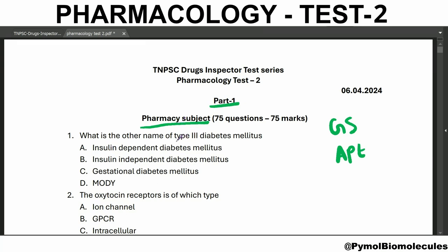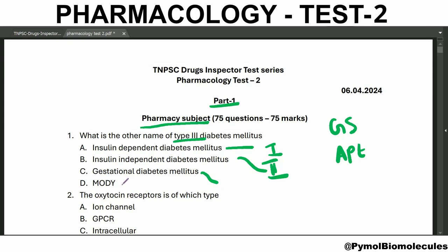What is the other name for type three diabetes mellitus? Insulin-dependent diabetes mellitus is type one. Insulin-independent is type two. There is also type three, which is called MODY — maturity onset diabetes in young. And gestational diabetes mellitus is called type four.